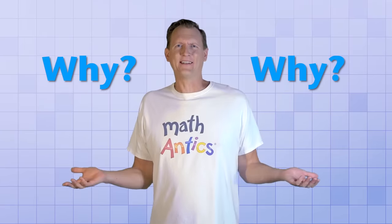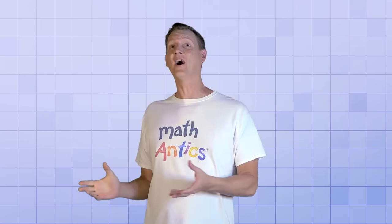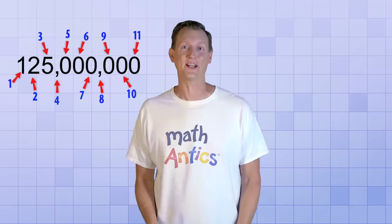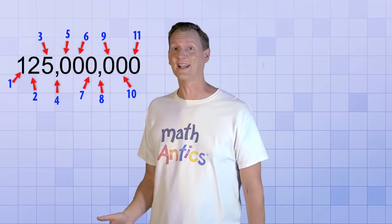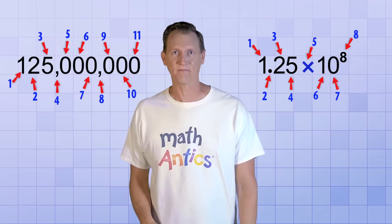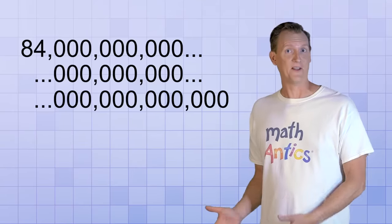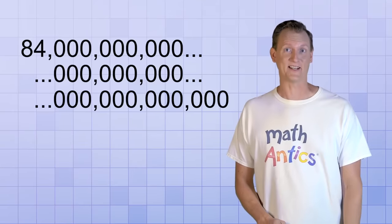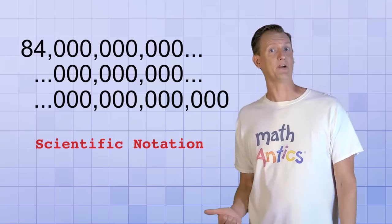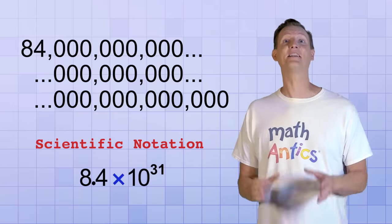But why would we want to do that? Well, did you see how much writing it saved us? When we wrote out 125 million, we had to write 11 characters including commas. But when we wrote the same number in scientific notation, we only had to write 8 characters. Not convinced that it's worth the savings? How about this number? That's a lot of zeros to write, isn't it? But in scientific notation, this number is just 8.4 times 10 to the 31st power. That's much better!